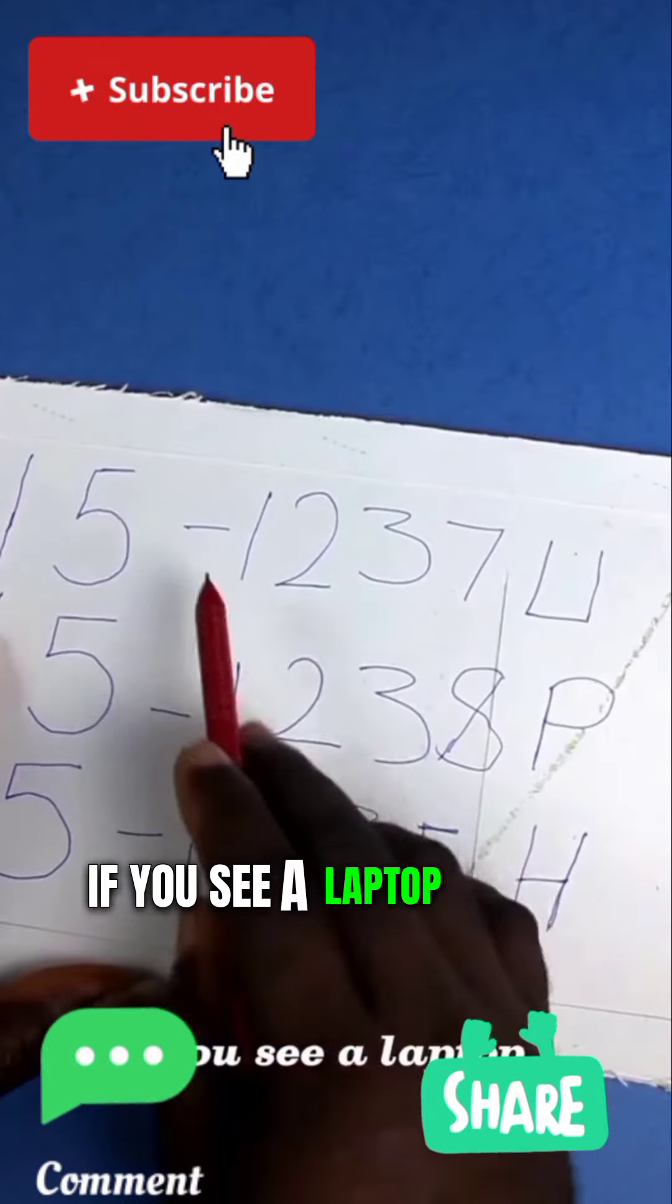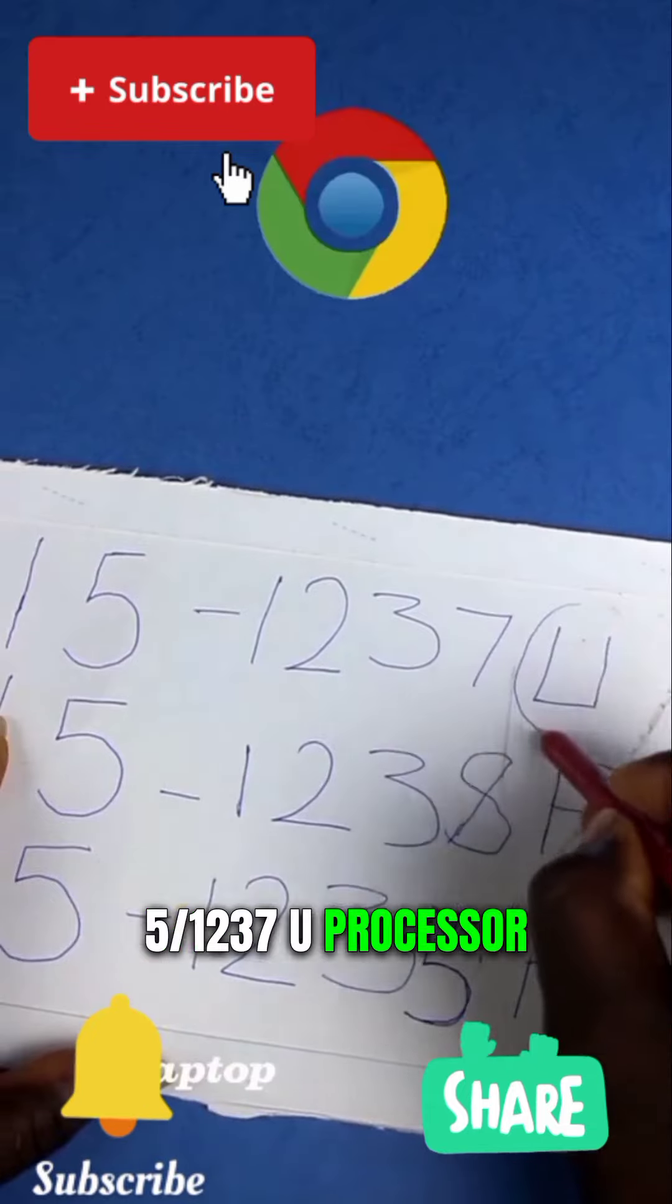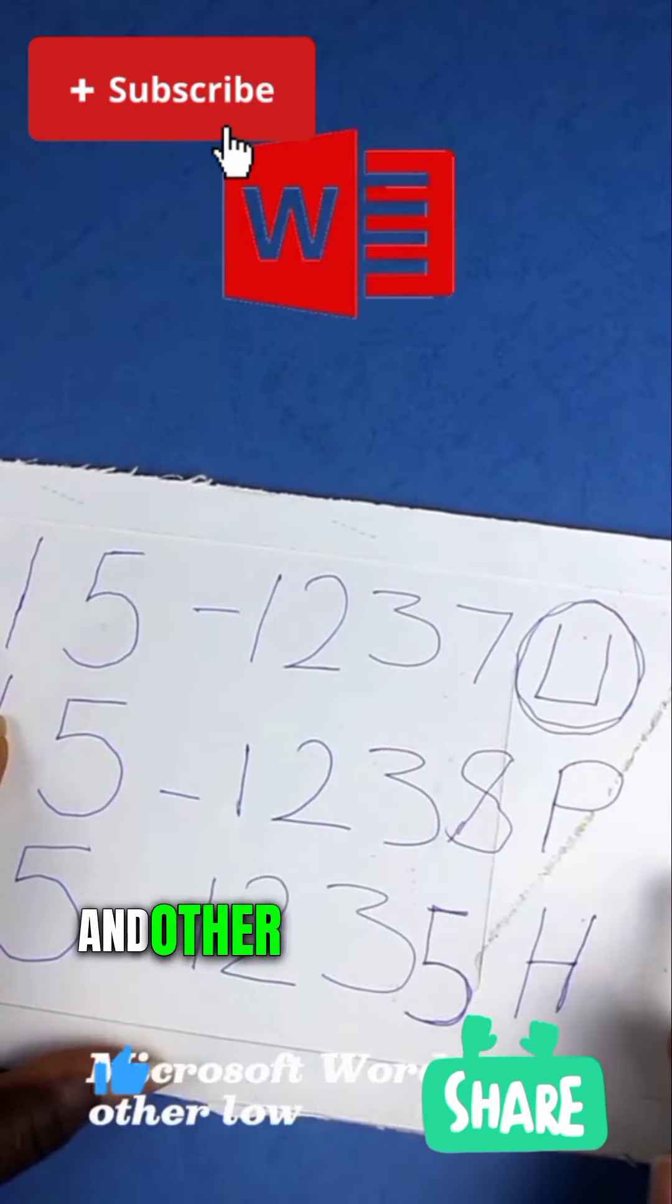For example, if you see a laptop with the description Intel Core i5 slash 1237U processor, that laptop is made for Google Chrome, Excel, Microsoft Word and other low power tasks.